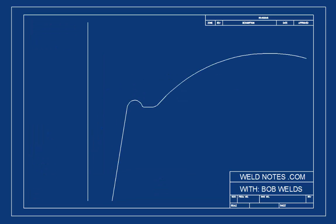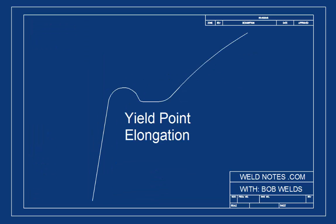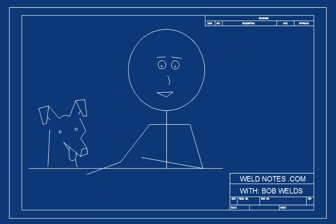This little flat area is where the material keeps stretching without raising the stress level. This is called yield point elongation. This is where the material starts deforming in a different way.